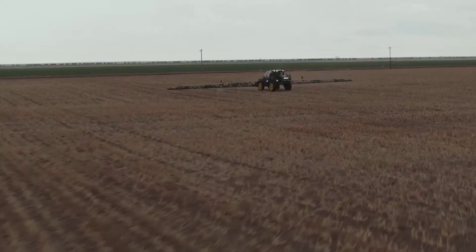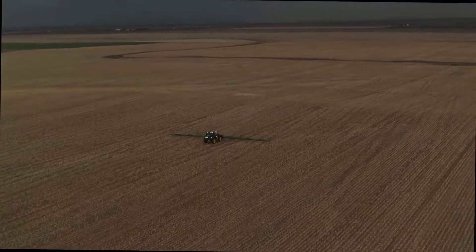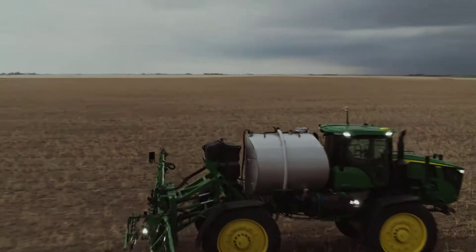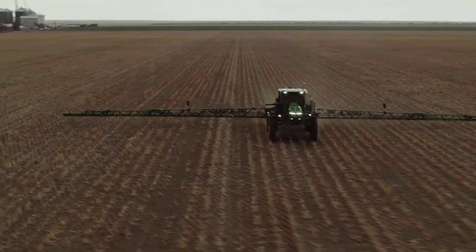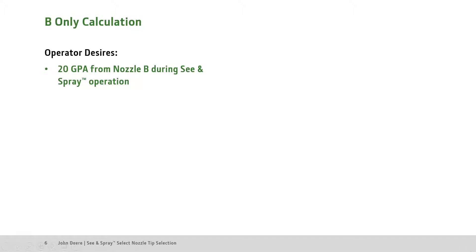After deciding which of these three configurations the operator would like to spray with, we can calculate our nozzle tip sizes for Nozzle B, then Nozzle A if necessary. Now that we have enabled See & Spray, let's walk through an example where the operator wants to See & Spray out of Nozzle B only. The operator wants to spray at a desired See & Spray rate of 20 gallons per acre while maintaining a 10 mph operating speed on a sprayer with 15-inch nozzle spacing.